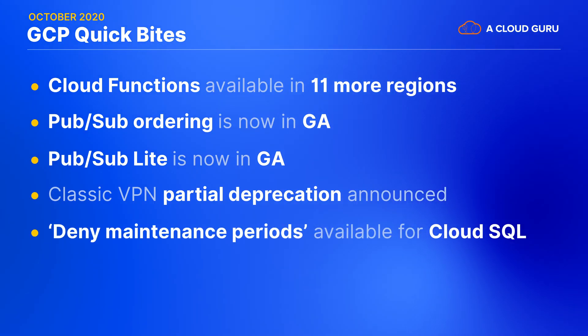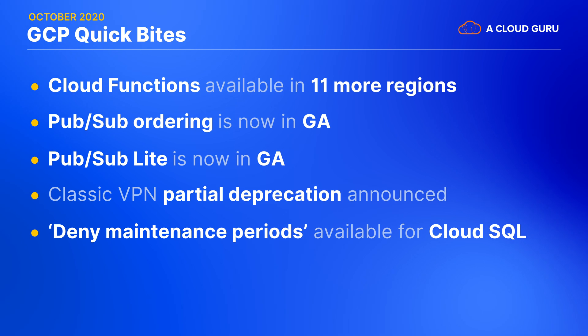Deny maintenance periods are now available for Cloud SQL. Google introduced new deny maintenance periods for Cloud SQL, which allows you to prevent automatic maintenance during specific periods, mitigating the risk of outages or performance degradation at critical times. With the holiday season fast approaching, every second counts. Nobody wants angry tweets from customers about their website being slow or experiencing outages. While we should never avoid updates altogether, we should consider cases where this feature will be useful in the coming months.